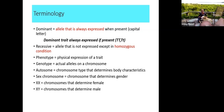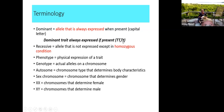A dominant trait is always expressed if present. Since you acquire two alleles — one from father and one from mother — if you have two capital Ts you are homozygous dominant, and if you have capital T and lowercase t you are heterozygous dominant; either way the dominant trait is expressed. The recessive trait is only expressed if homozygous — two lowercase letters. Phenotype means the physical expression of a trait, and genotype refers to the actual alleles on a chromosome.